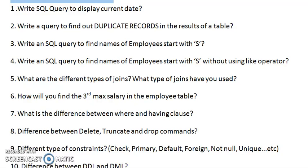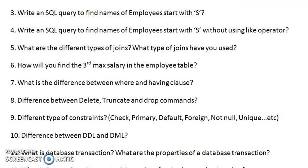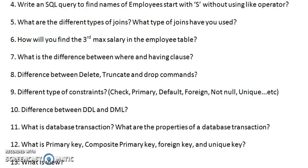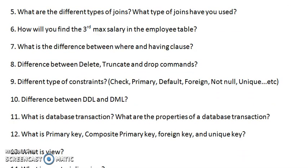What is the difference between DELETE, TRUNCATE, and DROP commands? What are the different types of constraints: CHECK, PRIMARY, DEFAULT, FOREIGN, NOT NULL, and UNIQUE? What is the difference between DML and DDL?